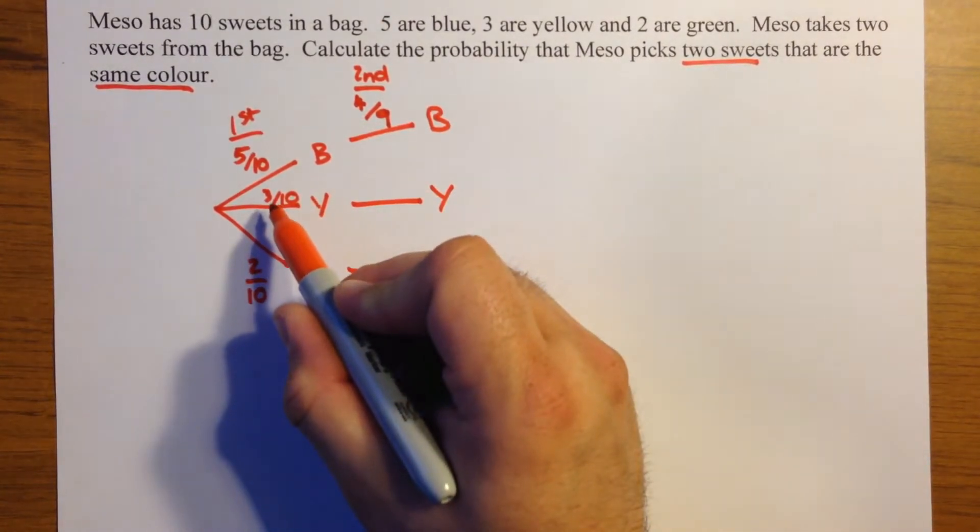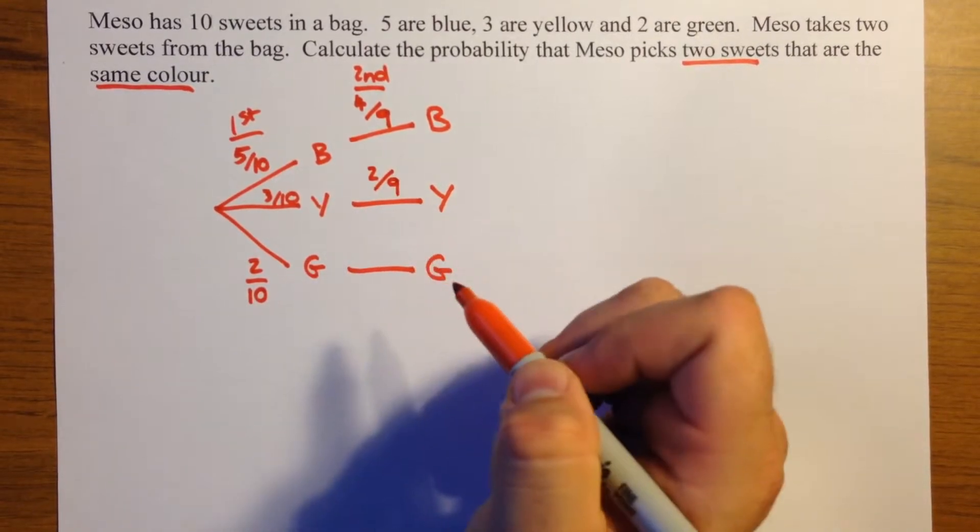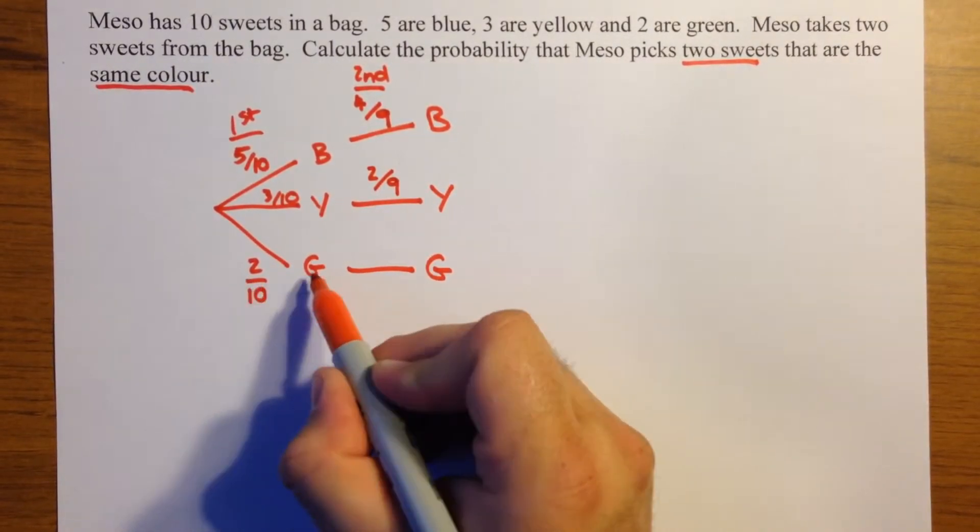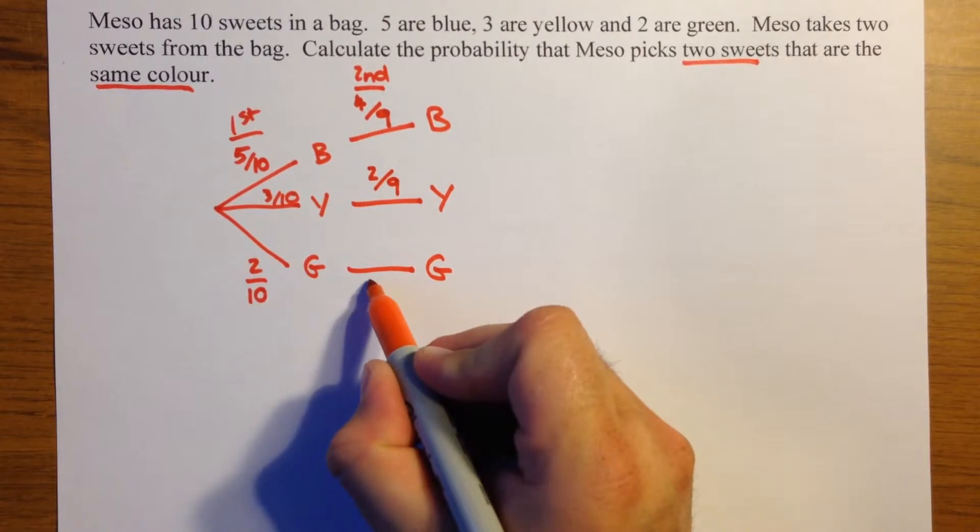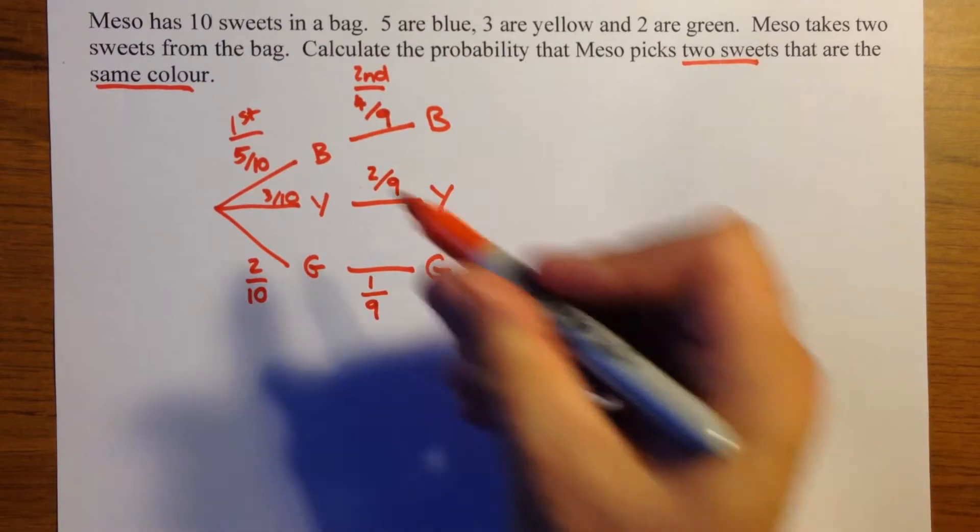Likewise here, there were three yellow, there'll only be two left now, and that's out of nine as well. And if you picked a green first time, the chance of picking a green second time, there's only one left in, and that's out of nine sweets altogether.